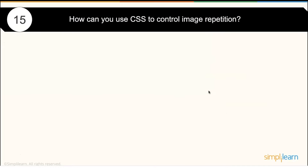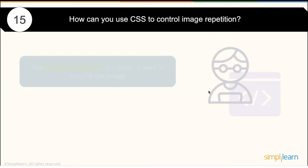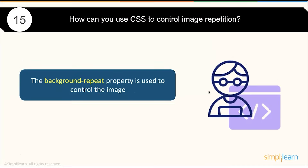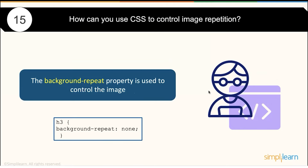How can you use CSS to control image repetition? Using the background-repeat property, you can set background-repeat: no-repeat so that the background image will not be repeated again and again within your background.